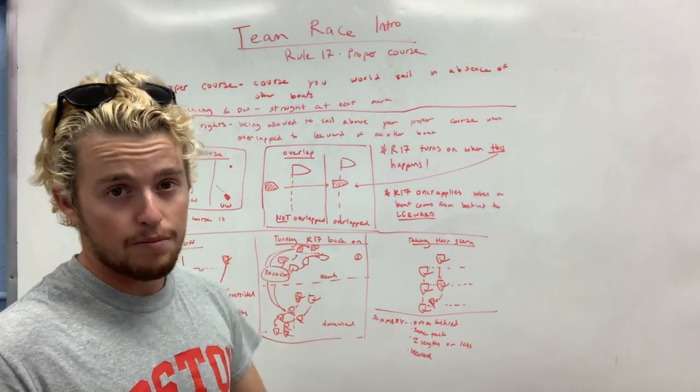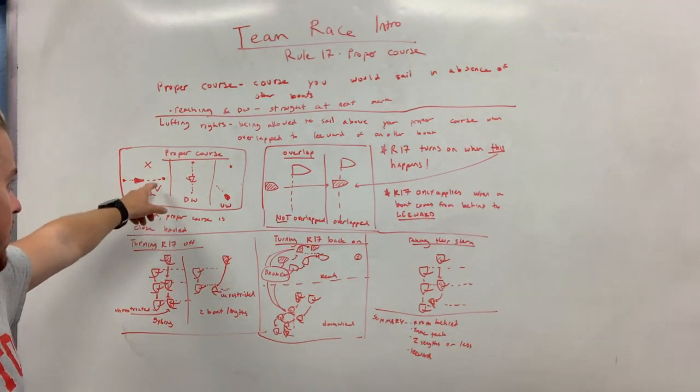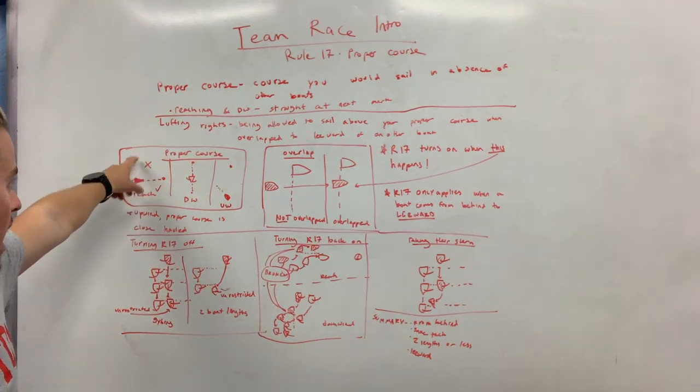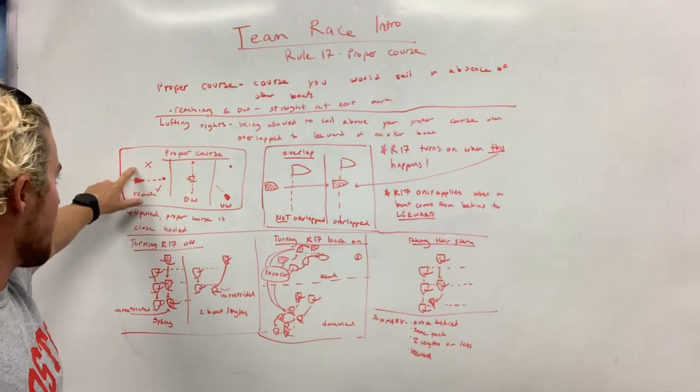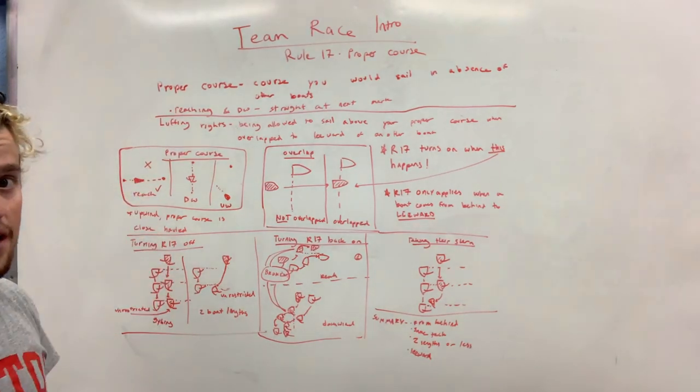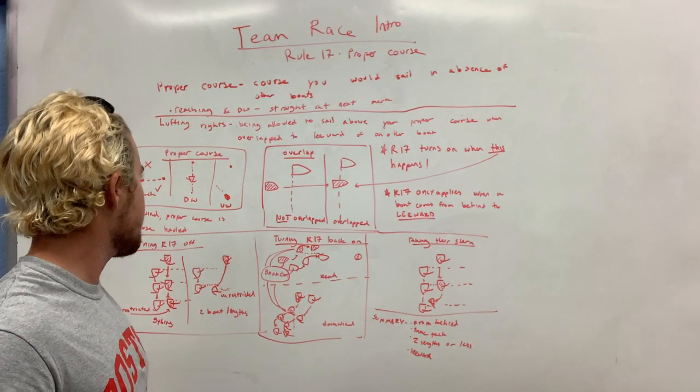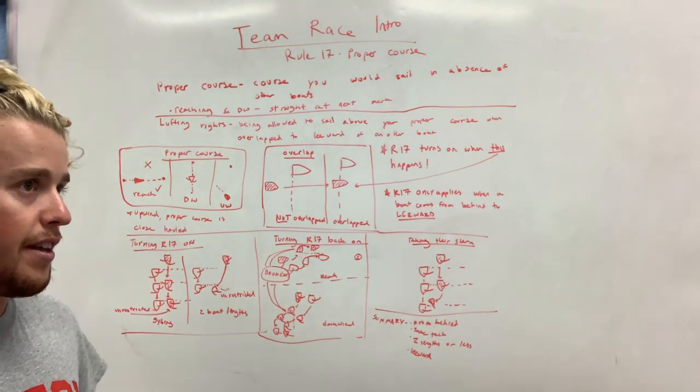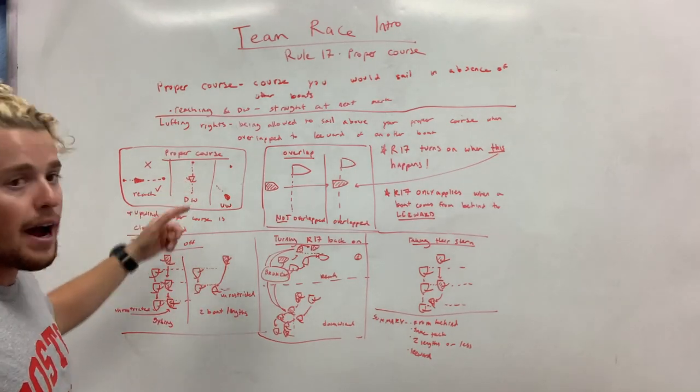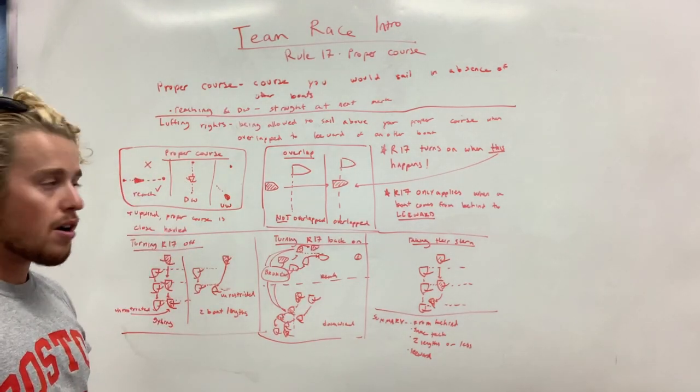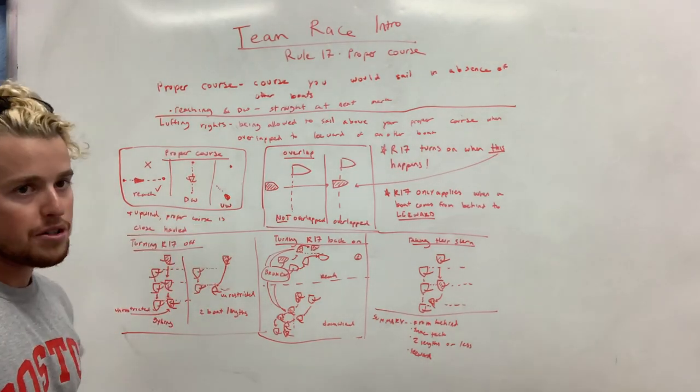So now we're going to talk about some examples of proper course. On a reach, it is to point directly at the next mark. If you go any higher and you're restricted to your proper course, so Rule 17 applies, you can't go any higher. If you go any lower, that's fine. You can go as deep as you want, but you just can't sail above this magic line. So you line the mark right up with your bow and you sail that course. Number two, downwind, wing if you have to, but basically line your bow directly up on that mark, and that's your proper course. And then finally upwind, your proper course is close-hauled.